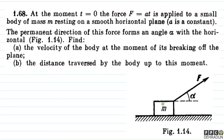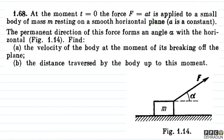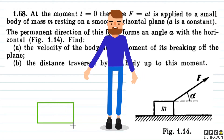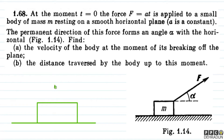We can see that the object with mass m has an external force F which is time-varying — as time increases, the force is increasing. We need to find the velocity of the body at the moment of its breaking off the plane. The object breaks off the plane when the normal reaction becomes zero.